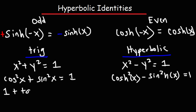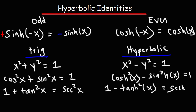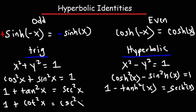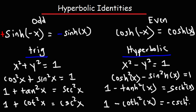In trig you've seen the formula one plus tangent squared equals secant squared. The hyperbolic version looks like this: one minus hyperbolic tan squared equals hyperbolic secant squared — the only difference is a minus sign instead of a plus. For the next one, it's a bit more different: in trig, one plus cotangent squared equals cosecant squared, but for the hyperbolic version, one minus hyperbolic cotangent squared equals negative hyperbolic cosecant squared. So there are many similarities but a few key differences.